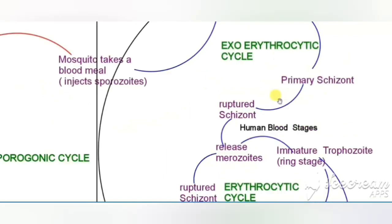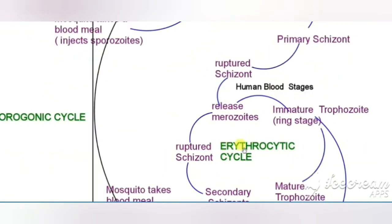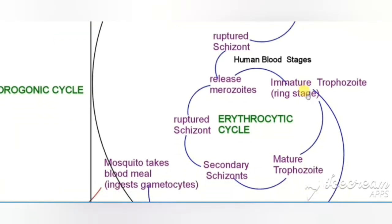After this stage, there will be the erythrocytic cycle. The merozoites released from the hepatocytes will attach to the RBC. In the RBC, the merozoites will get converted into a ring stage, that is the early trophozoite or immature trophozoite. This ring stage would be converted into mature trophozoites, which are then converted into schizonts. They rupture and release merozoites.